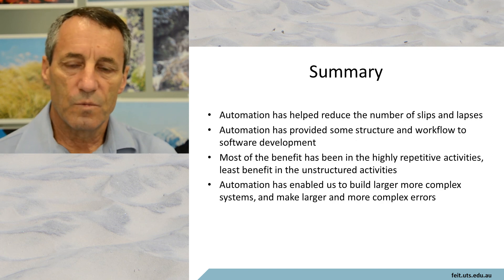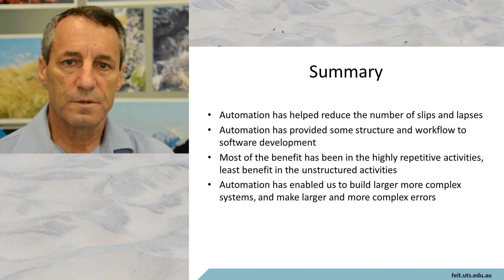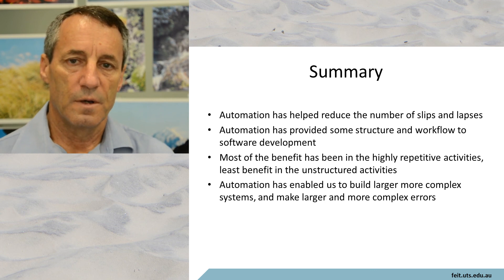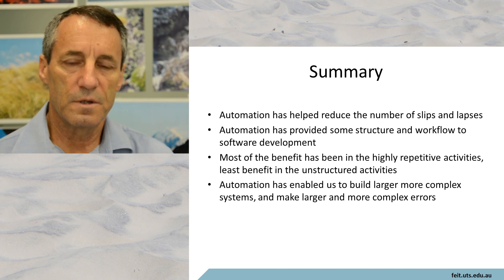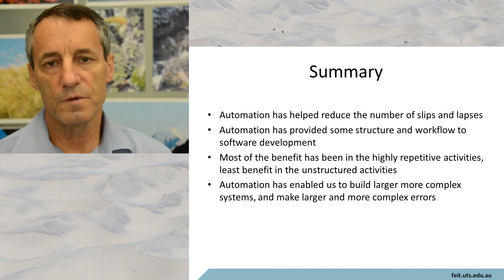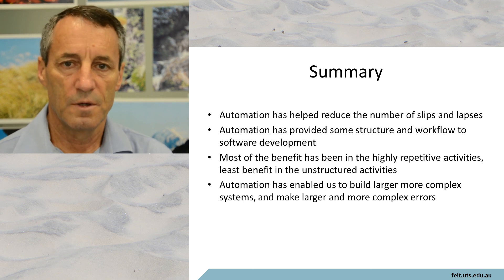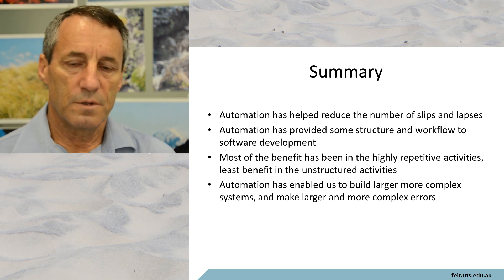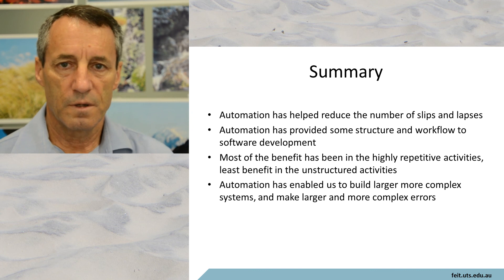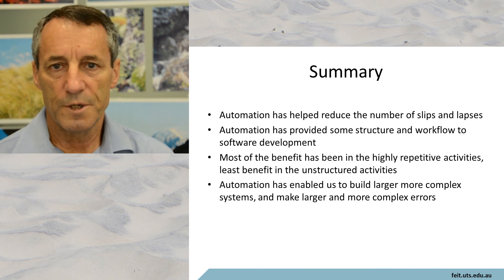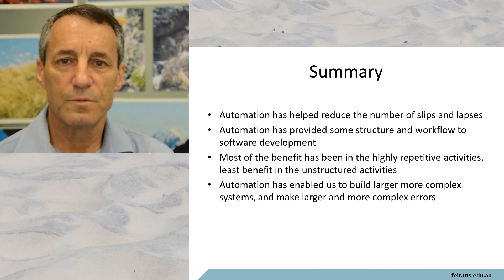In summary, we as humans tend to make mistakes, and we can use automation to try and prevent the slips and lapses that occur when things are very familiar and routine. We should not overly automate those things where we actually have to think. With that, we can now examine automation in the various parts of software development, and I look forward to seeing you in the next few topics.